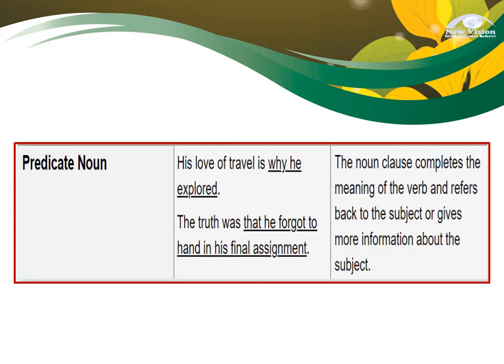The last use of your Noun Clause is as a predicate noun. Example: 'His love of travel is why he explored.' Another example: 'The truth was that he forgot to hand in his final assignment.' The Noun Clause completes the meaning of the verb and refers back to the subject, giving more information about it. What is the truth? — 'That he forgot to hand in his final assignment.' The clause refers back to 'the truth,' which is why it is called a predicate noun.